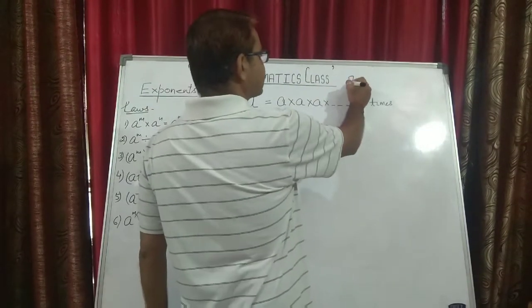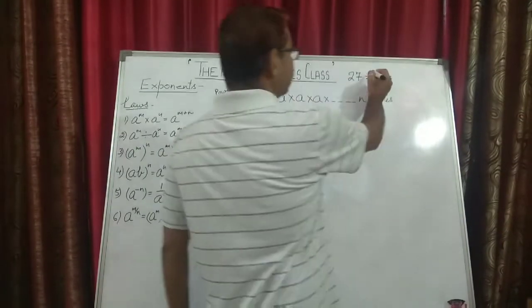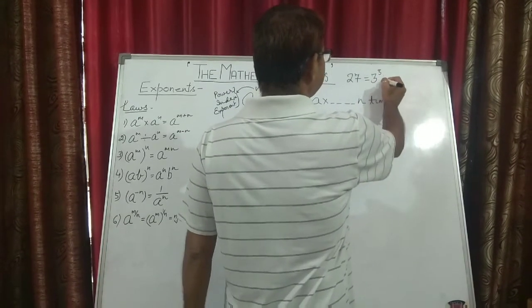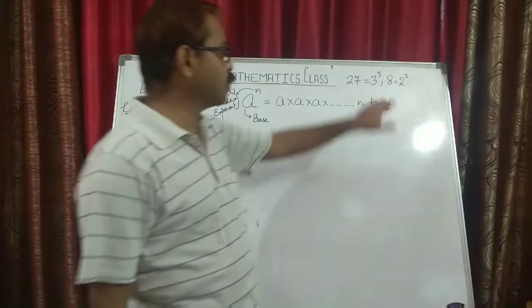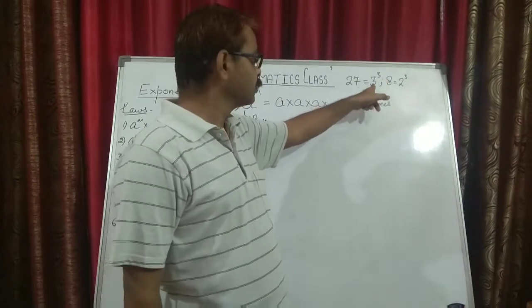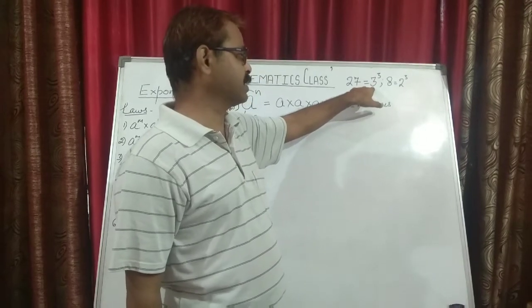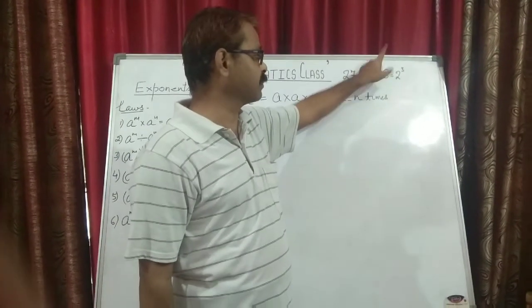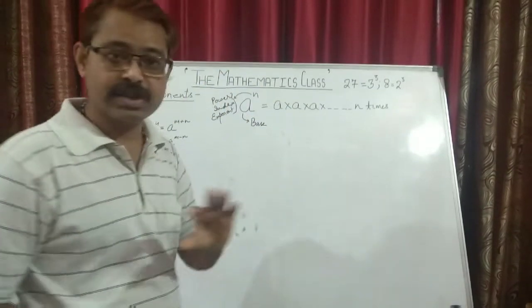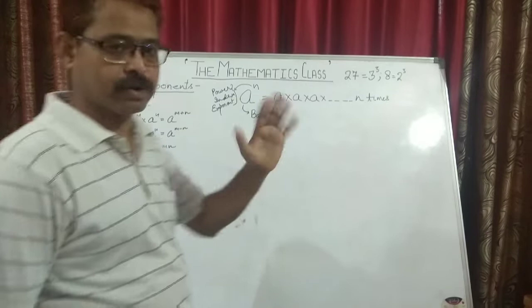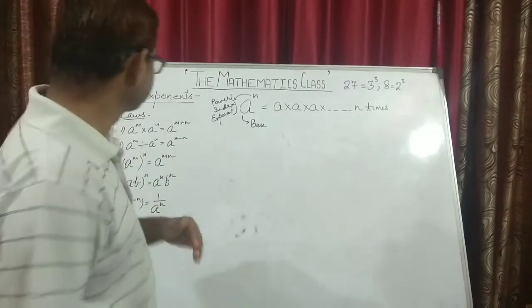Any number written in exponential form — suppose 27 — can be written as 3 to the power 3. If it is 8, it is 2 to the power 3. So 2 to the power 3 is the exponential form of 8, and 3 to the power 3 is the exponential form of 27. In the second case, 2 is the base and 3 is the power. Generally we will be using the term power — it's very common.